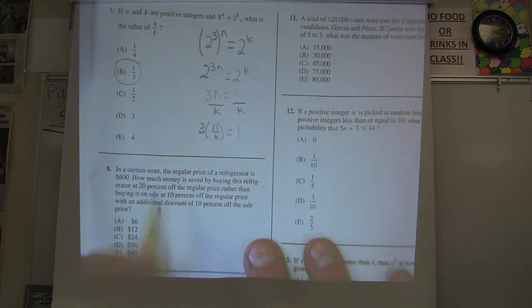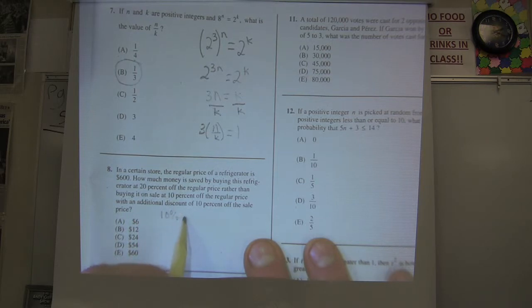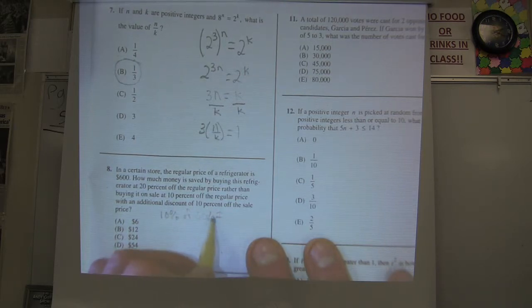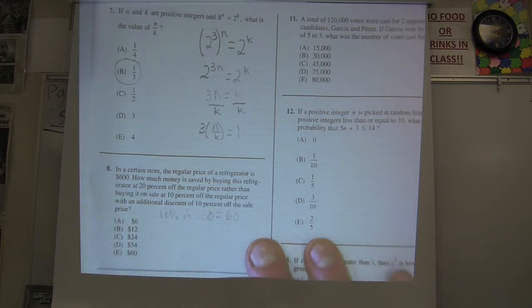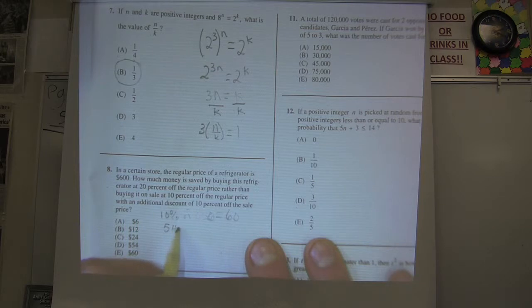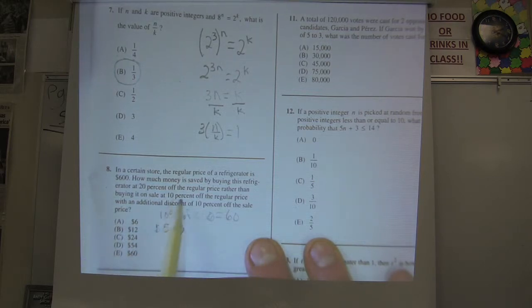Let's do the 10%. Well, 10% of 600 is $60. So the sale price is going to get me at $540. That's going to be my sale price. And then it says I get to take another 10% off of that.